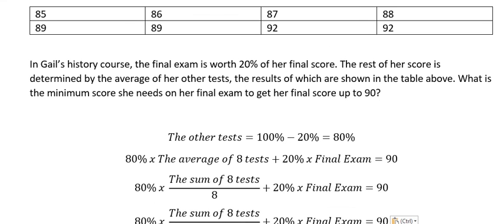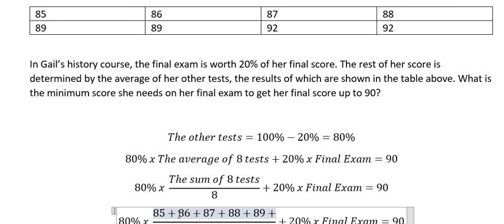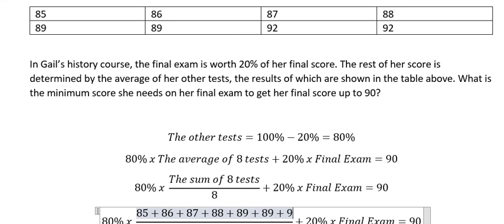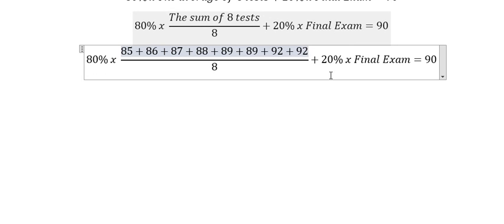Next, about the sum of 8 tests, we got about 85 plus 86 plus 87 plus 88 plus 89 plus 89 plus 92 plus 92. So we need to calculate the number to find about the final exam in here.